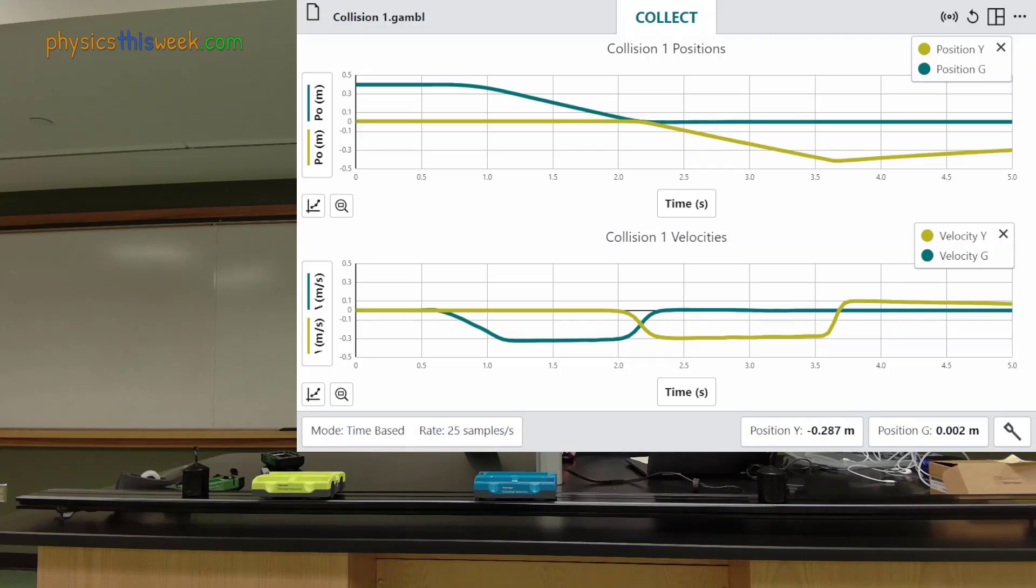When fitting the position data it is important to only fit the position while the cart is actually moving at a constant speed. The velocity data will help us choose the correct data for the fit. You can see how this is done in the next video.